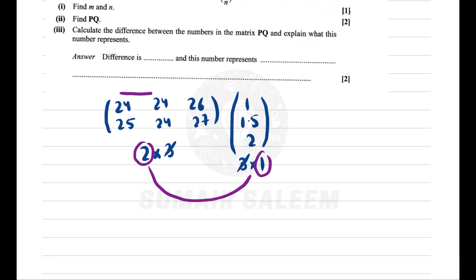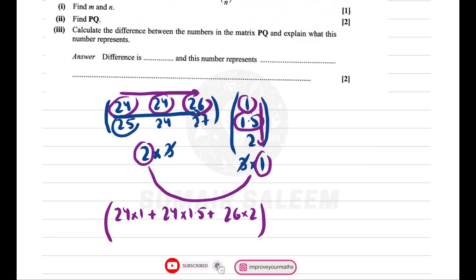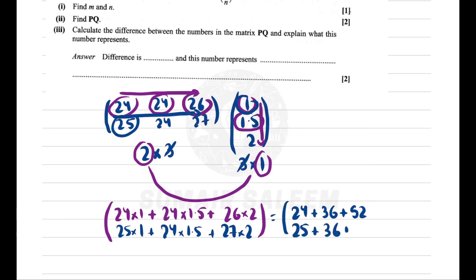Let's apply the French type method. 24 into 1 plus 24 into 1.5 plus 26 into 2. Then 25 into 1 plus 24 into 1.5 plus 27 into 2. So my answer will be 24 plus 36 plus 52.